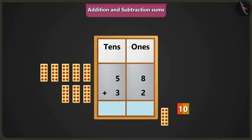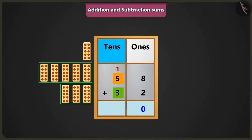So we will put 0 in the place of ones and we will carry over 1 in the place of tens. Now if we will add 5 and 3 of the box of tens, then after 5,